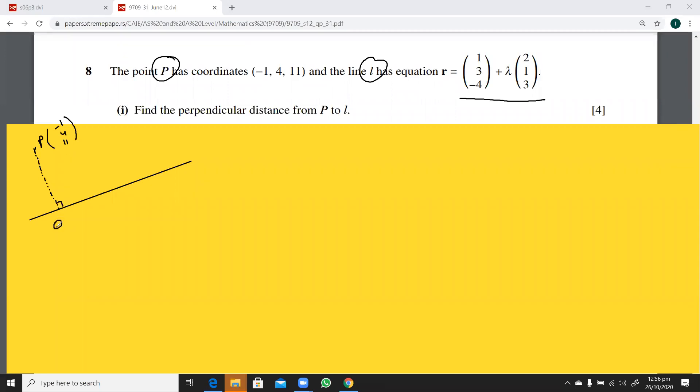I'll suppose that this point is Q down here. This is the foot of the perpendicular from P onto this line. Now, I have to suppose that what are the coordinates of this point Q? So using this, can I write it as 1 plus 2 lambda, 3 plus lambda, and this is minus 4 plus 3 lambda.